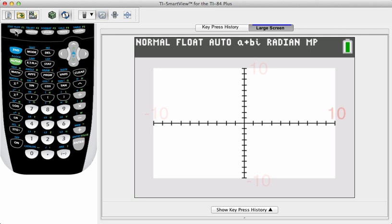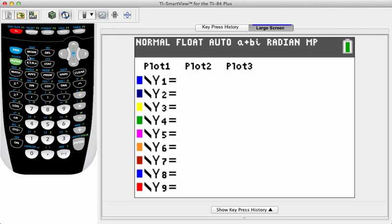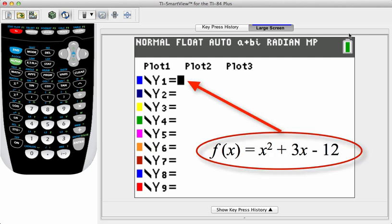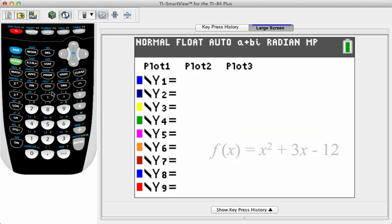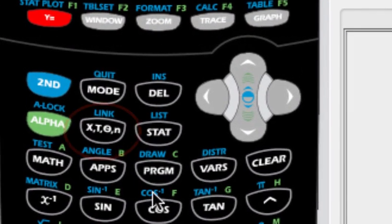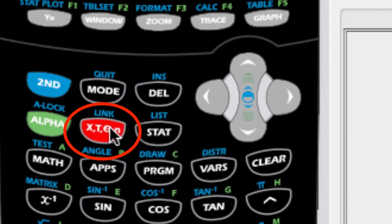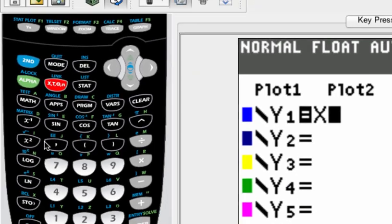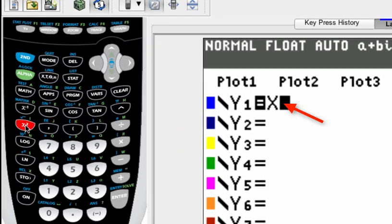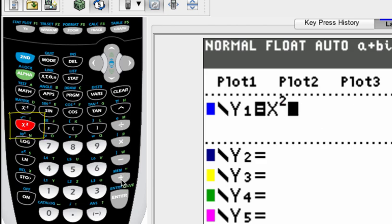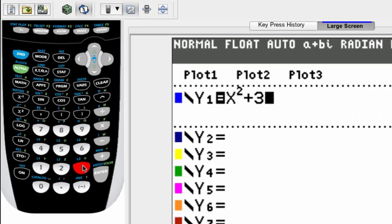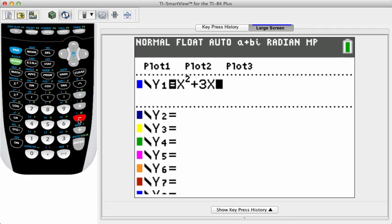So, let's return to the Y equals screen and put in the function. Now, we're going to actually type in the equation so that we can graph it. The equation is X squared plus 3X minus 12, and here's how we put it in on the keypad. There's a key marked with X, T, theta, and N, and a single press of this key will put in an X. The X squared key is on the far left of the keypad, and then we just type in the rest. Plus 3X minus 12. All right.